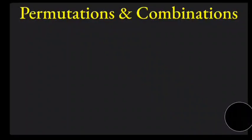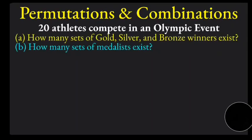All right, my friends, this is just a little example that will get us more familiar with permutations and combinations. The example we'll look at is this one: suppose there are 20 athletes competing in an Olympic event. What we're going to do is first figure out how many sets of gold, silver, and bronze winners there are.